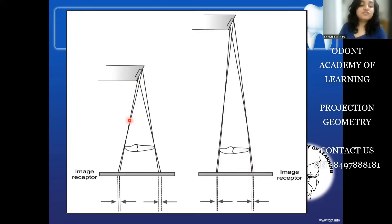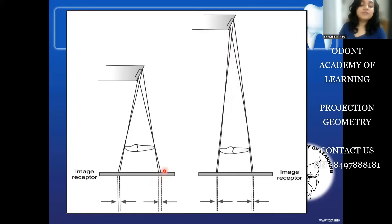If we use a short cone, the x-ray photons will tend to diverge as soon as they exit the cone. When they diverge and hit the film, there will be a higher penumbra compared to that produced by a long cone technique.